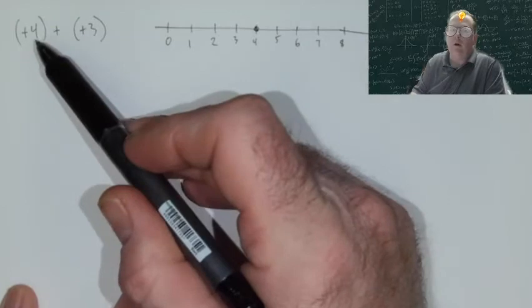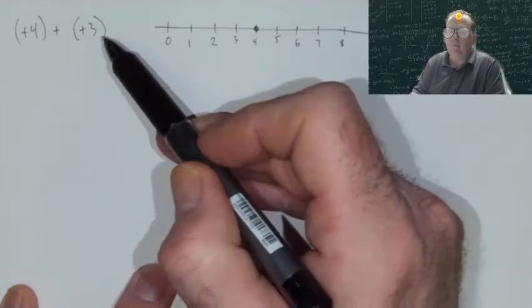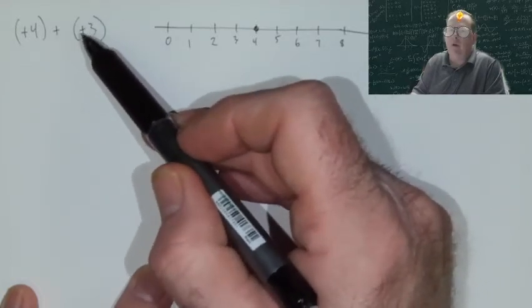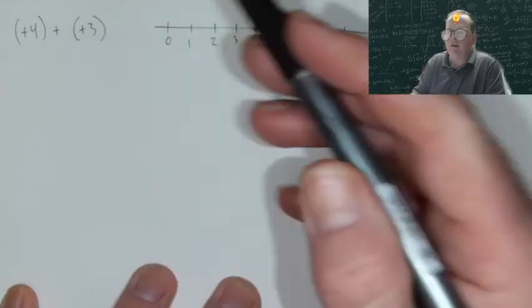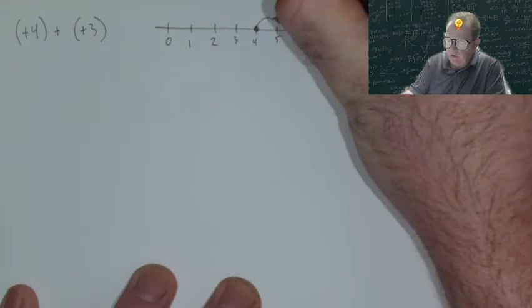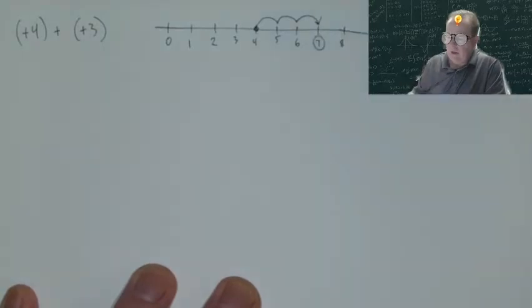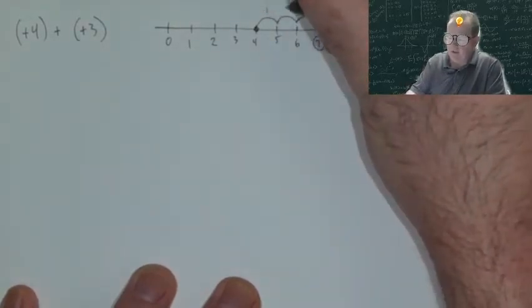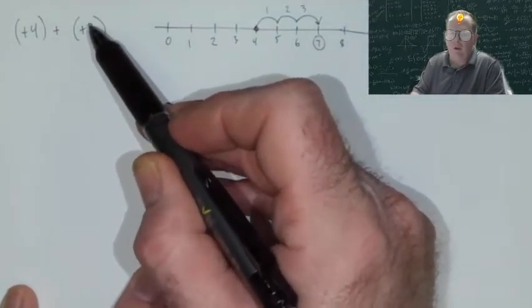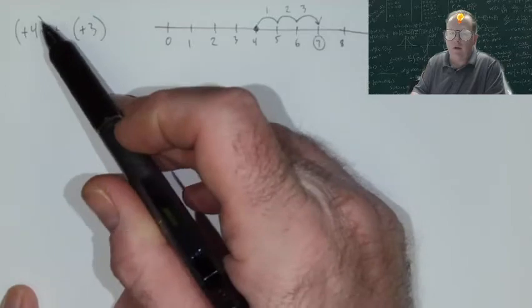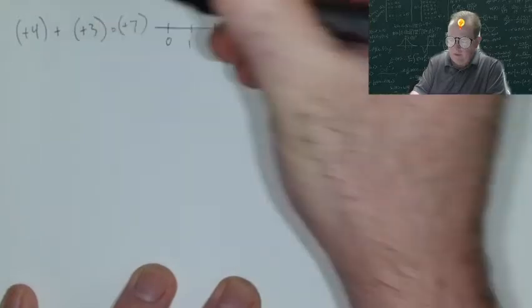Now, we know that 4 plus 3 is 7, but let's follow the process. We're adding, and we're adding positive 3. Well, we know that if we're adding 3 to something, positive 3, that the number has to get bigger. So we're going to move to the right: 1, 2, 3 spots. And we're going to land on positive 7. So 3 little leaps to make this positive 3 added on to the positive 4. So we know that our answer is positive 7.